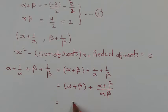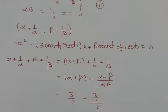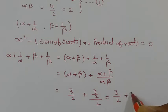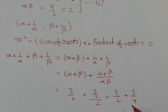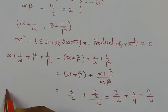So alpha + beta = 3/2, and (alpha + beta)/(alpha · beta) = (3/2)/2 = 3/4. Adding these: 3/2 + 3/4 = 9/4. Therefore, the sum of the new roots is 9/4.